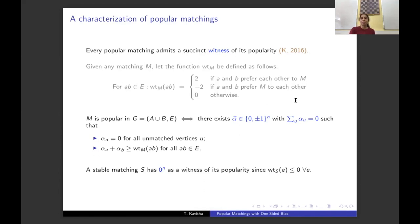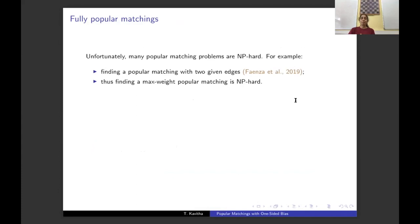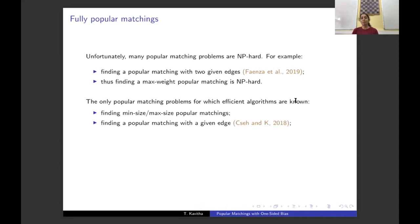Our problem is to compute a popular matching that contains only certain edges. Unfortunately, most popular matching problems have turned out to be NP-hard — these include finding a popular matching containing two given edges, excluding two given edges, and the generic optimal popular matching problem with edge costs. Very few popular matching problems have efficient algorithms: finding a minimum size popular matching, a max size popular matching, a popular matching with one particular edge, and the fully popular matching problem.